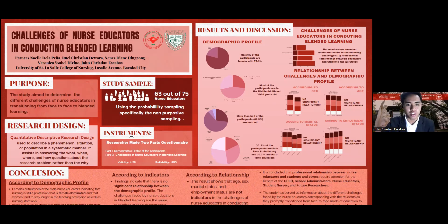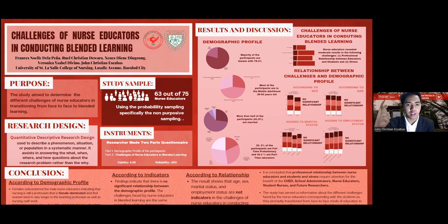The survey questionnaire consists of a formulated set of questions for nurses to answer. There are four criteria, and each has six questions depending on the challenges, namely: technological issues with six items, professional relationship of nurse educators and students with six items, stress with six items, and adapting with six items, giving a total of 24 sets of questions.